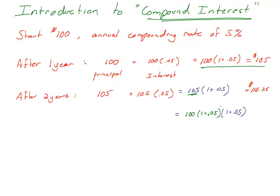The rule of exponents says we think of this as both having an exponent of 1. I'm going to simplify it and say this is 100 times (1 plus 0.05) squared. So after one year, I have 100 times (1 plus 0.05). After two years, I have 100 times (1 plus 0.05) squared.